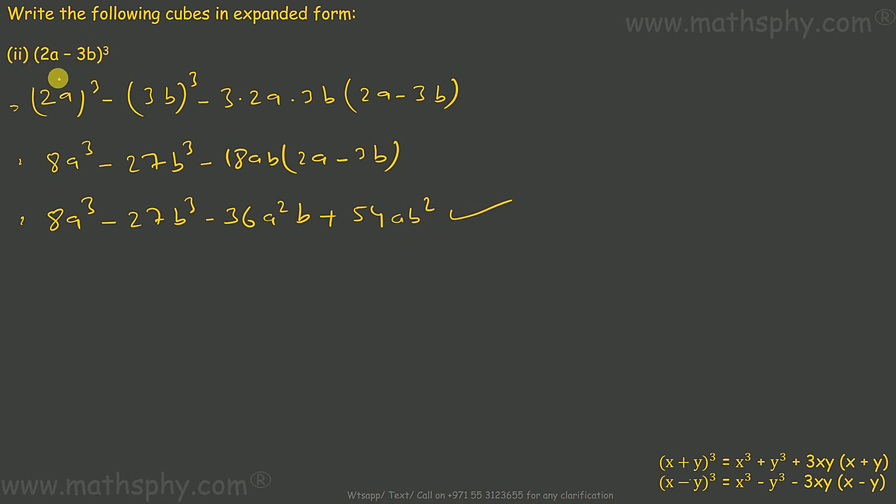The same polynomial can be expanded by this identity x plus y also. In that case, my 2a will stay as it is, and plus y cube means minus 3b cube, plus 3 into 2a into minus 3b into 2a plus minus 3b, which will come to 8a cube minus 27b cube.